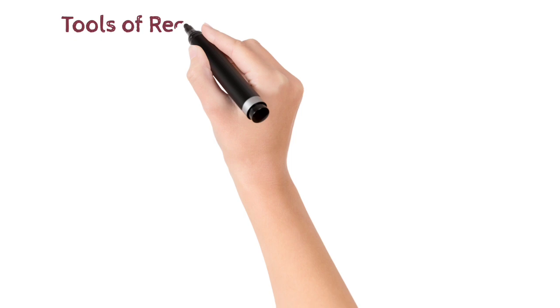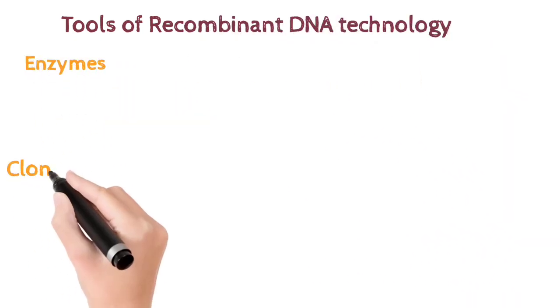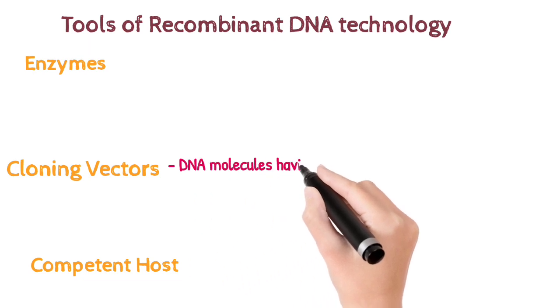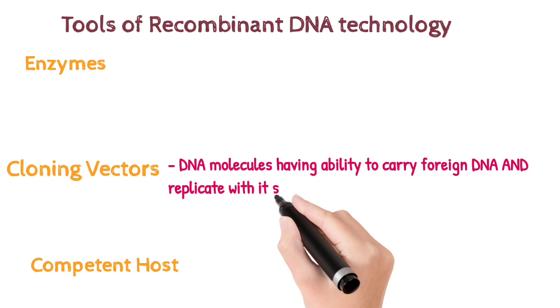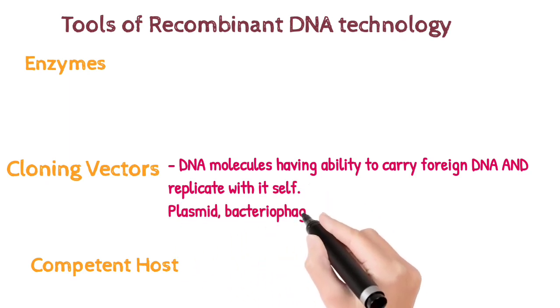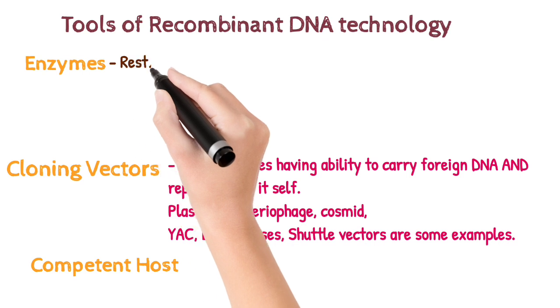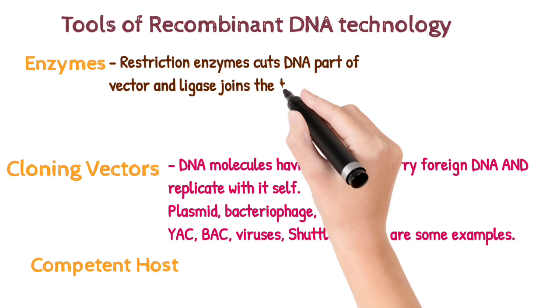Tools of recombinant DNA technology include enzymes, cloning vector, and competent host. Now what is cloning vector? DNA molecules having ability to carry foreign DNA and replicate with itself is cloning vector, like plasmid, bacteriophage, cosmid, BAC, etc.